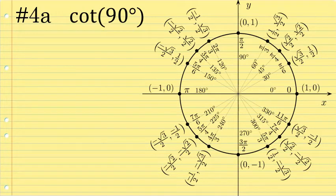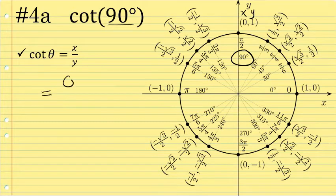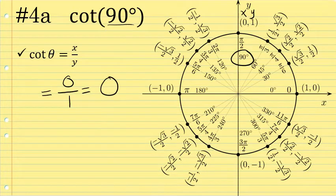Let's look at the cotangent of 90 degrees. The cotangent ratio is x over y. At 90 degrees, the associated x-coordinate is zero and the associated y-coordinate is one. So the cotangent of 90 degrees equals x over y, which is zero over one. Zero divided by any number is zero, so the cotangent of 90 degrees is exactly zero.